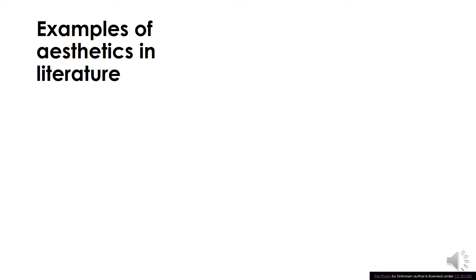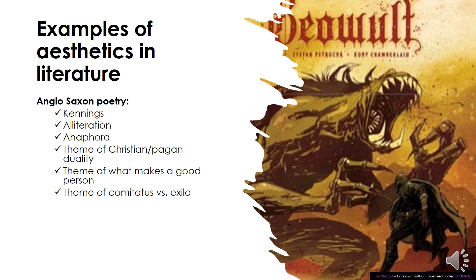Let's look at some examples of aesthetics in literature. For example, Beowulf. Beowulf is an example of Anglo-Saxon poetry. In Anglo-Saxon poetry, we typically find characteristics like kennings, alliteration, anaphora, and themes like Christian pagan duality, or what makes a good person, or comitatus versus exile. When we understand these elements and look for them in Anglo-Saxon poetry, we can better understand the type of people that wrote these poems and what their lives were like.